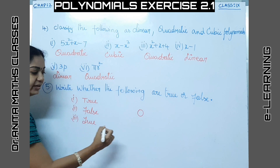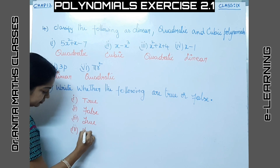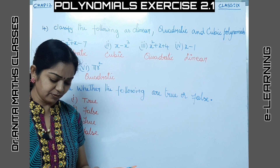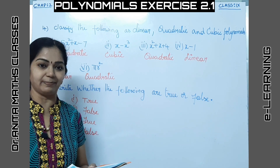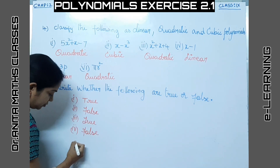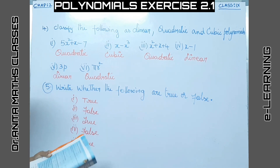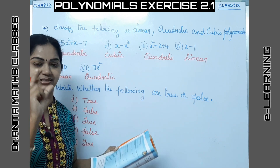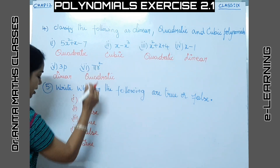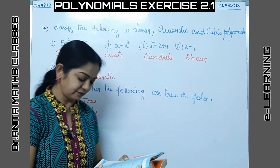Fourth — the degree of a zero polynomial is zero. That is FALSE; the degree of a zero polynomial is not defined. Fifth — the degree of x² + 2xy + y² is 2. That is TRUE; the highest power is 2. Sixth — πr² is a monomial. That is TRUE; πr² has only one term, so it is a monomial.